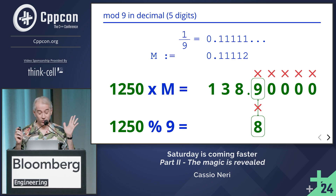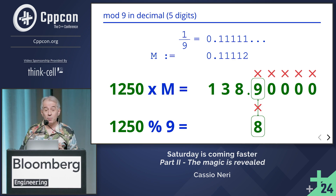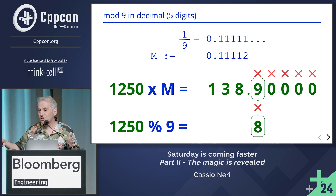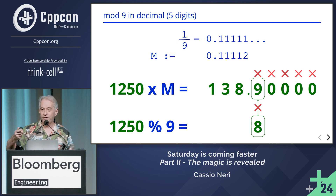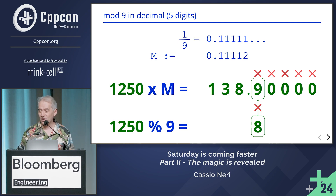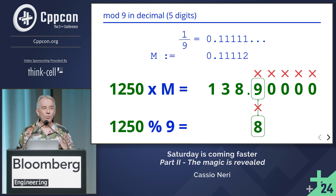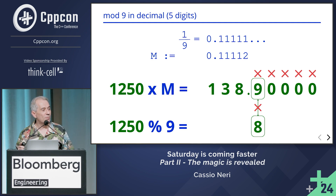Taking more digits enlarges the range for which the first digit after the dot matches the modulo. So that's almost all I have to say about decimals and modulo nine.